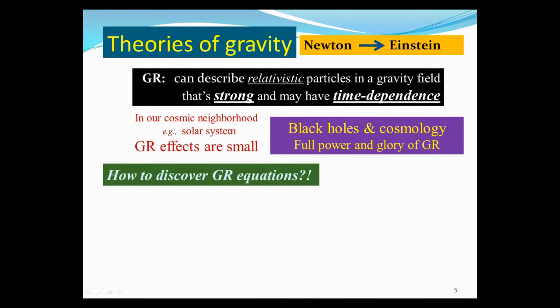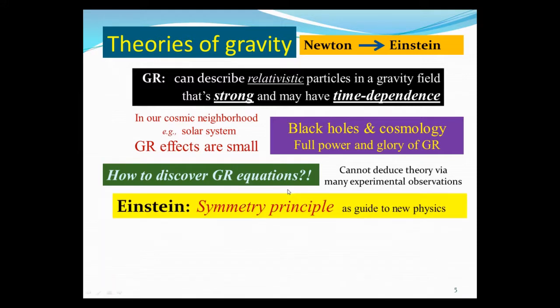So now, if the GR effect is so tiny in our cosmic neighborhood, how do we go about discovering GR equations? You cannot deduce the theory through many experimental observations like the case of electricity and magnetism. How did Einstein do it? How did he discover the GR equations without all the experimental observations? Basically, Einstein used what's called the symmetry principle as a guide to new physics. The symmetry principle can restrict the type of equation you can allow to have. And then, if you require it to reduce to Newton's theory in the appropriate limit, it turns out there are not many possibilities. This way, Einstein arrived at his GR theory of gravity.